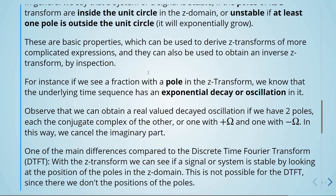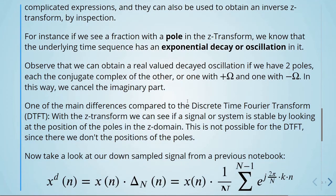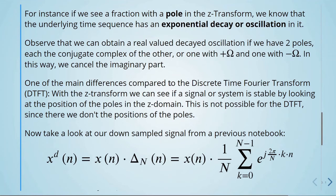We can obtain a real-valued decaying oscillation if we have two conjugate complex poles — one with frequency +Ω and one with −Ω — which cancel the imaginary part. One of the main differences compared to the DTFT is that with the Z transform we can assess stability by looking at the position of the poles in the Z domain, which is not possible with the DTFT since there we don't have access to pole positions.